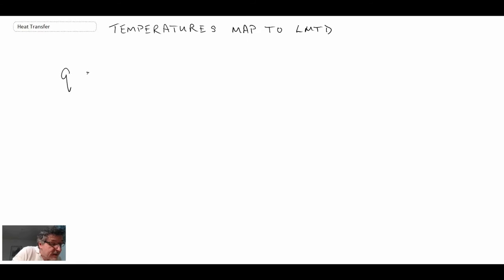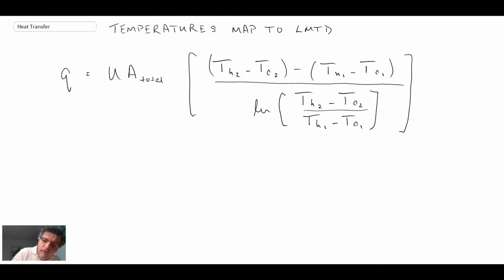Just to write out the expression that we had, so that's the expression. Now one thing to note, this makes it a little easier to remember: notice that this expression here TH2 minus TC2 is in the numerator and then TH1 minus TC1 is in the denominator.